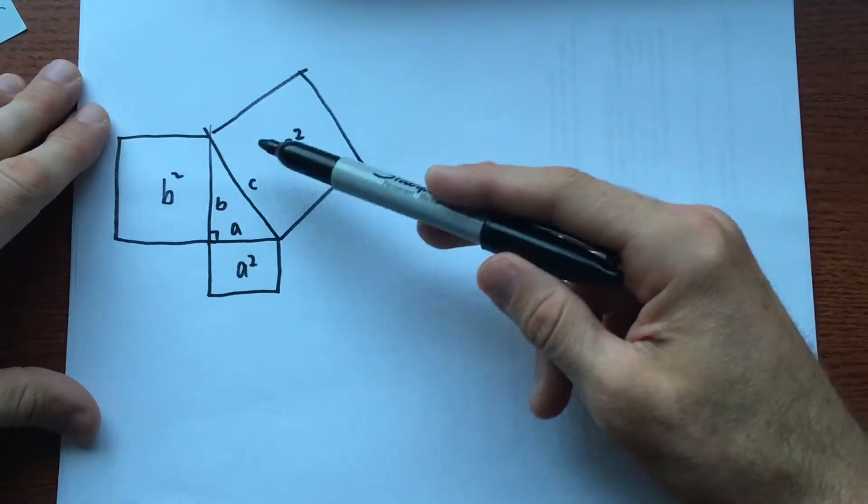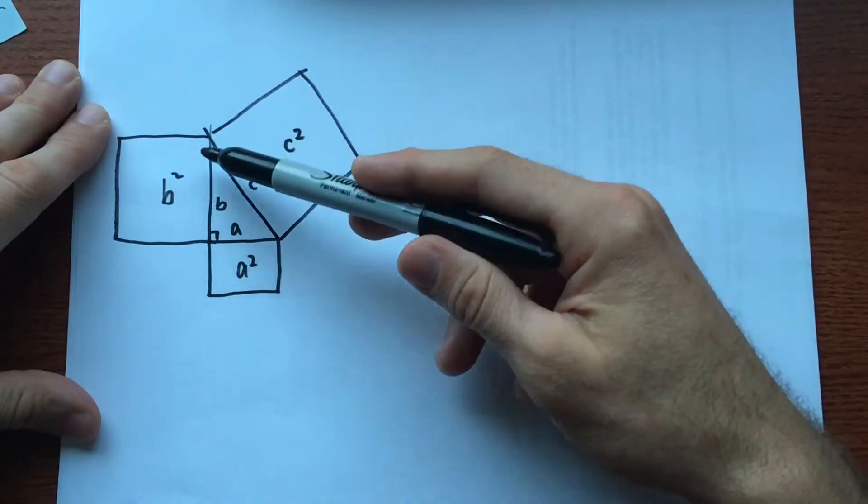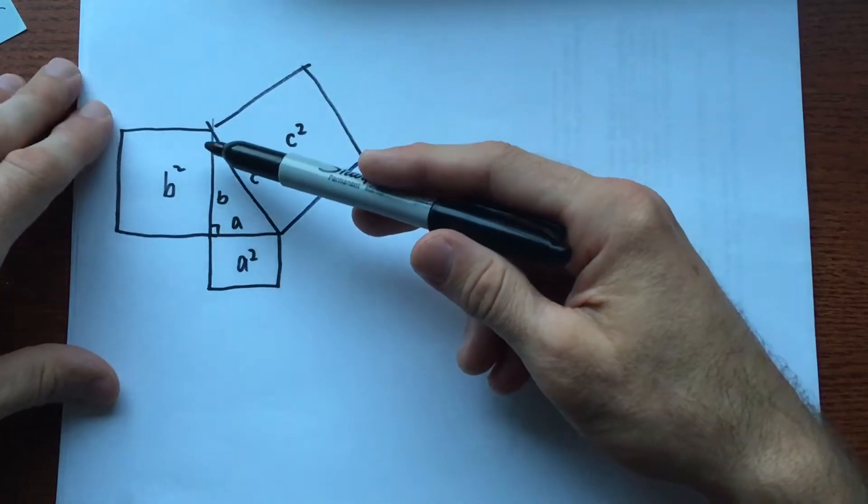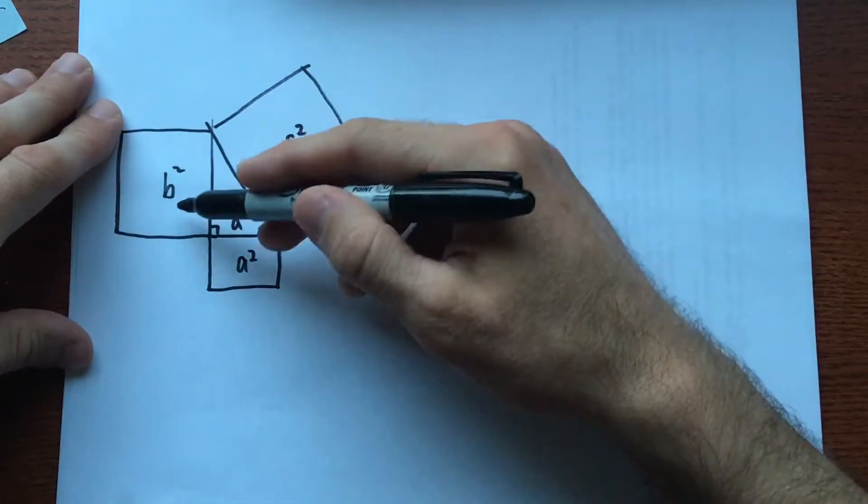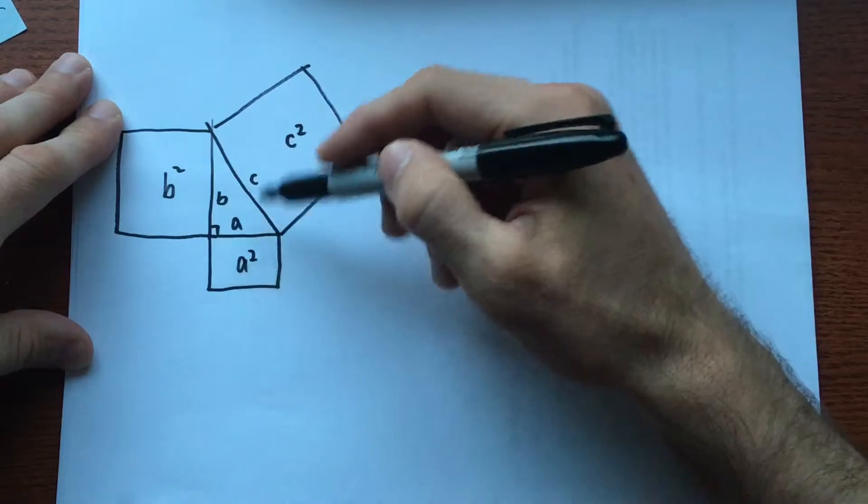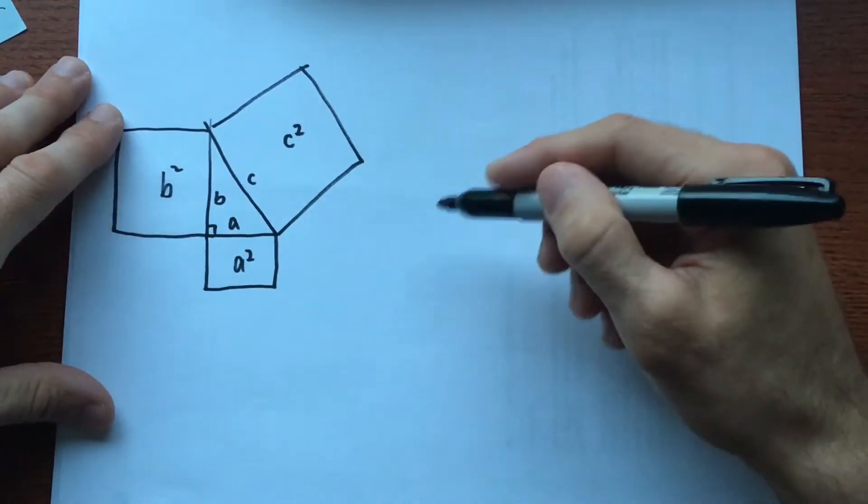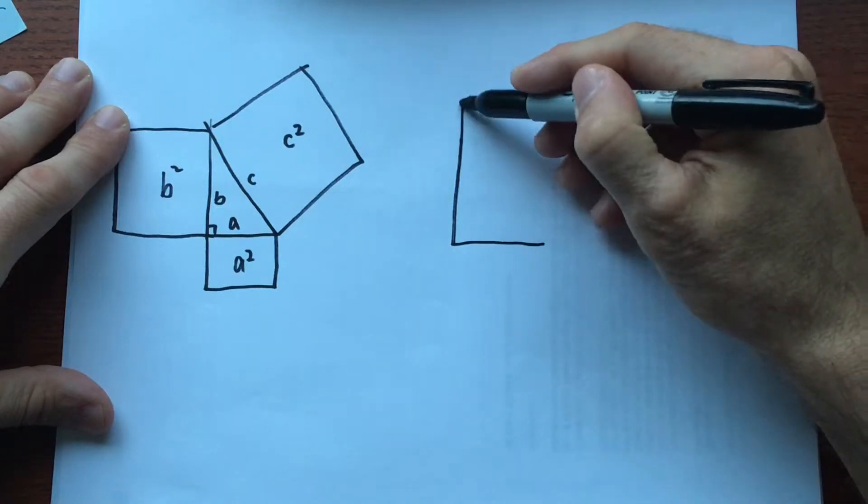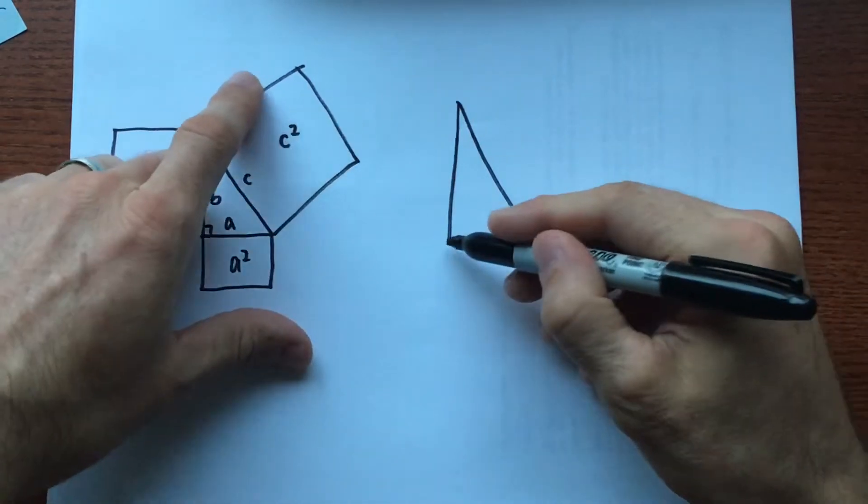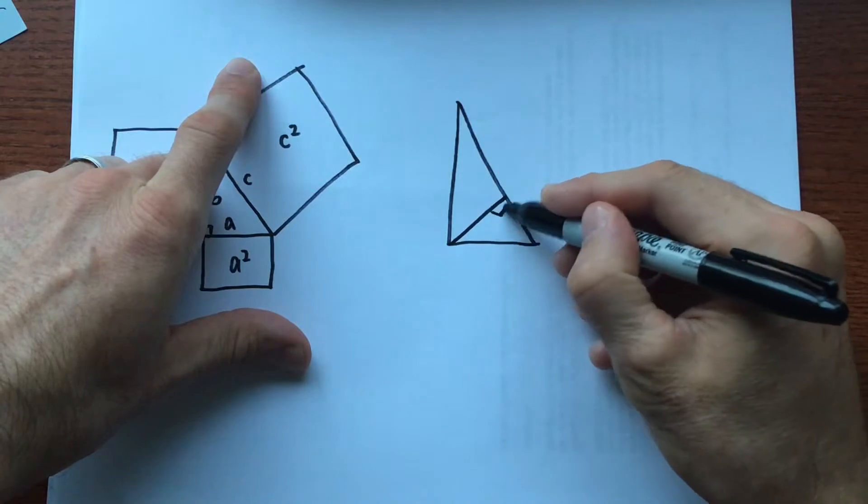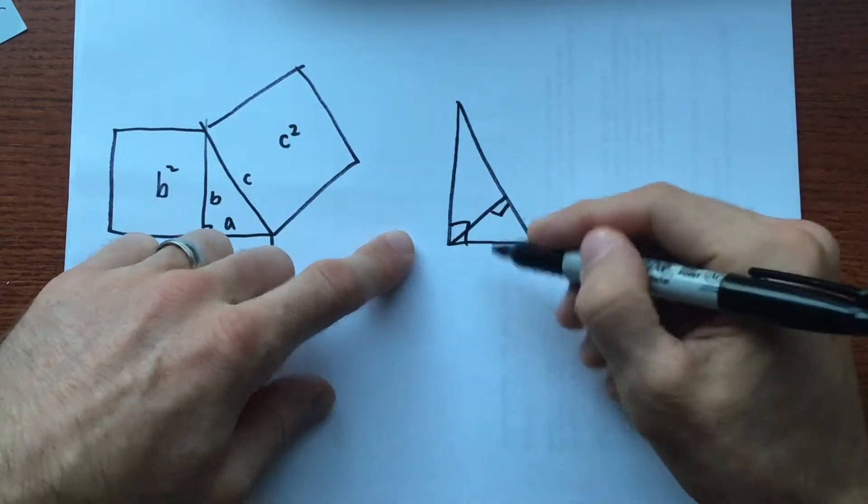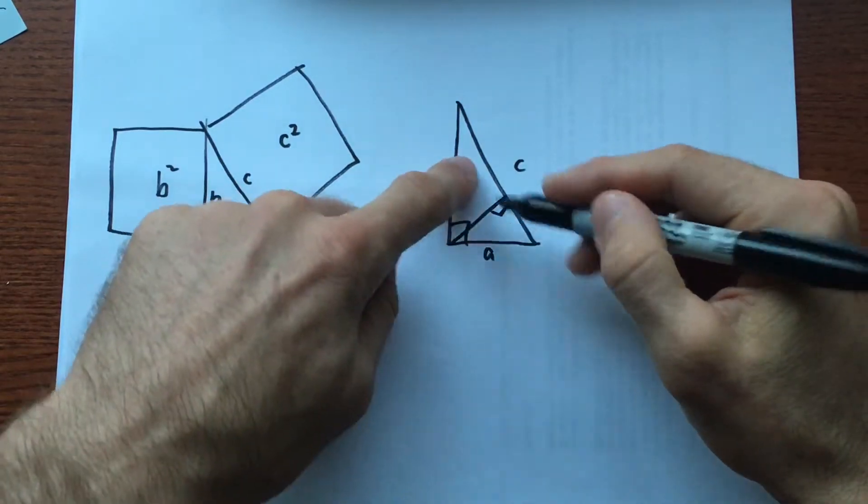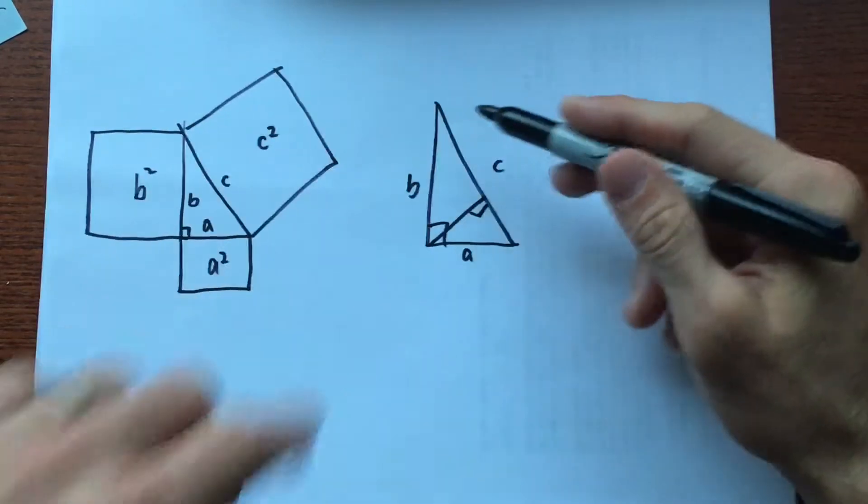But we don't have to necessarily use squares. We just want to find some geometric object who has an area whose length squared is proportional to the edge sizes. So we can do that with this triangle here. Instead of drawing the triangles on the outside, we're going to draw them on the inside. So it's very clear that these two triangles, when added together, cover the whole triangle.